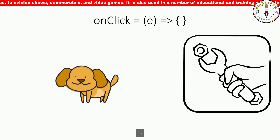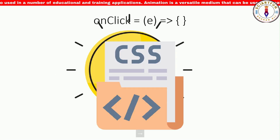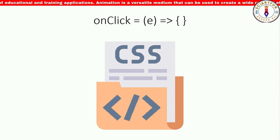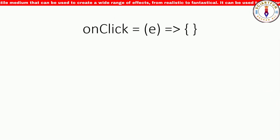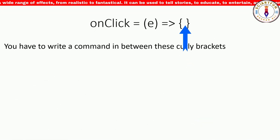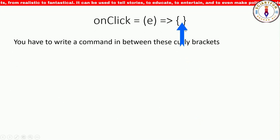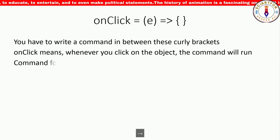To use the onclick property, you first need to create an object and then set its onclick property to a code block. The code block can contain any valid Algodoo code. Now let me show you the format of the code. The onclick property looks like this — you have to write code in between these curly brackets. Here, onclick means whenever you click on the object the code will run.